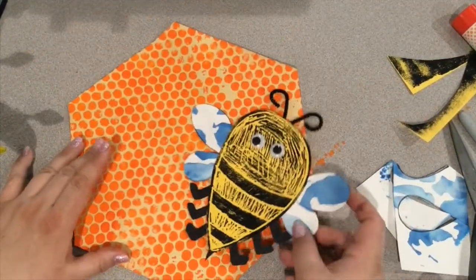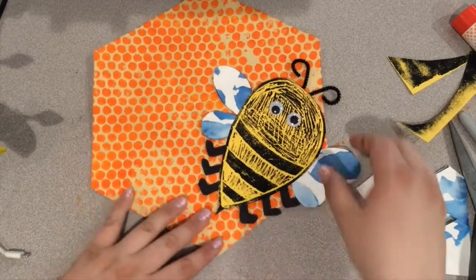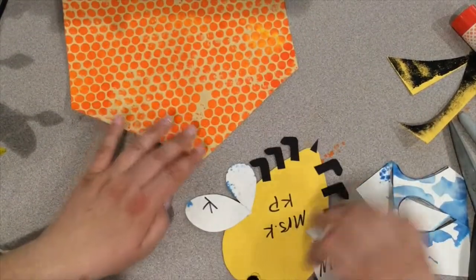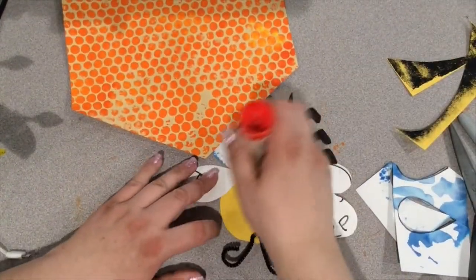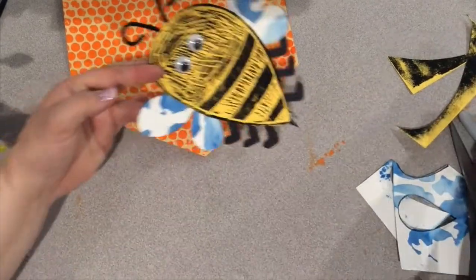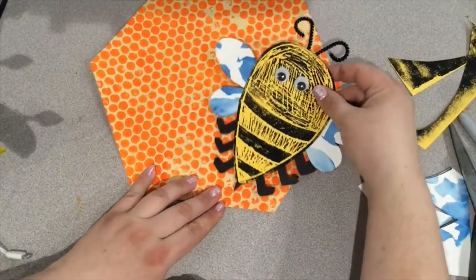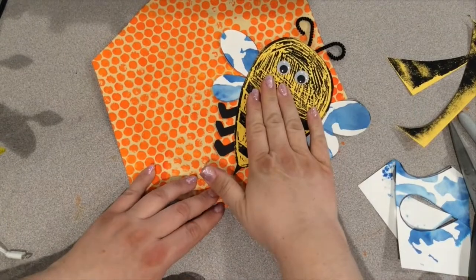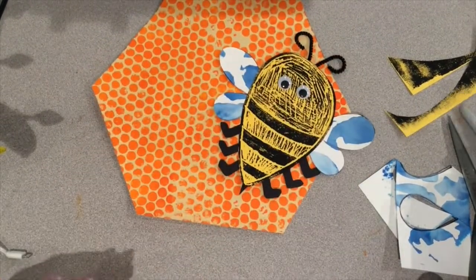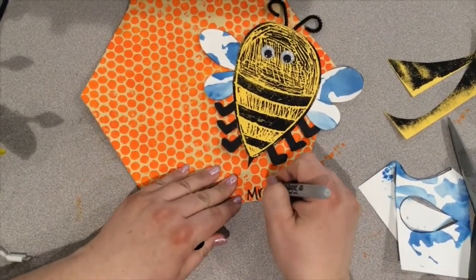Your final step is to glue your bee onto your honeycomb. You can decide how you would like to make the placement. Make sure you add plenty of glue to the back so that it really sticks. Make sure to sign your name on the bottom of your honeycomb and you're all done.